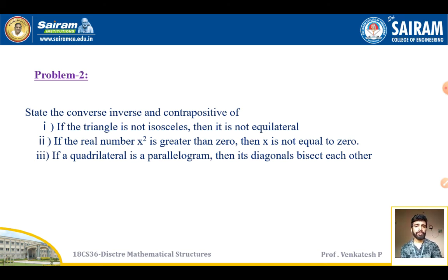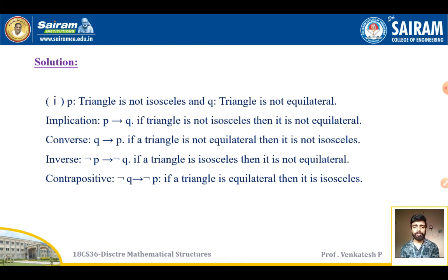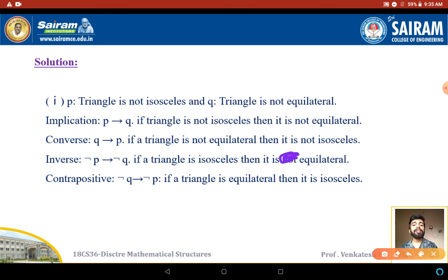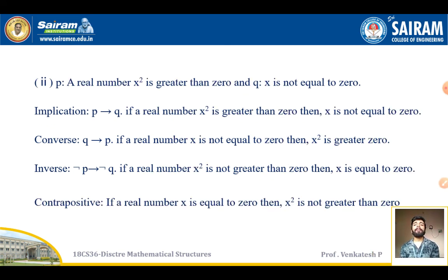For problem 1, let P be 'triangle is isosceles' and Q be 'triangle is equilateral'. Implication (P→Q): If a triangle is isosceles, then it is equilateral. Converse (Q→P): If a triangle is equilateral, then it is isosceles. Inverse (¬P→¬Q): If a triangle is not isosceles, then it is not equilateral. Contrapositive (¬Q→¬P): If a triangle is not equilateral, then it is not isosceles.